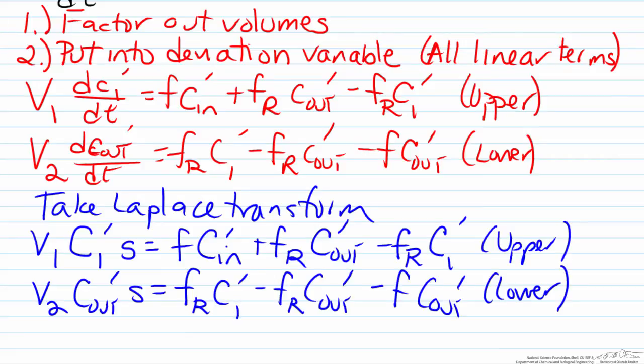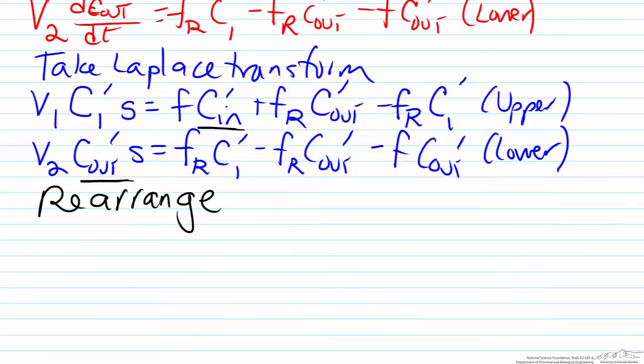Remember that our goal is to find a transfer function that relates C_out to C_in. We have C_out as a function of C_1, and from the first bound see that C_1 is a function of C_in and C_out, hence the interacting nature. We want to develop both into transfer function form, so we'll gather the like terms for the term with S.